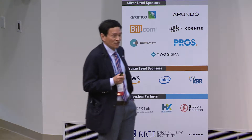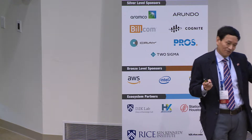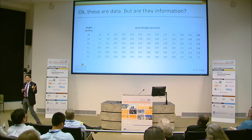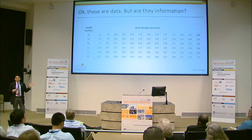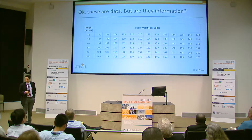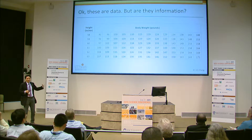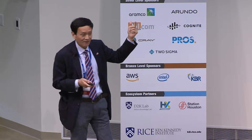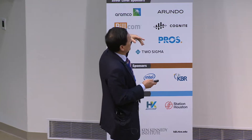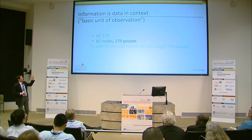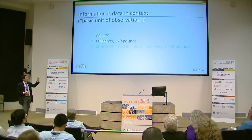And another distinction: we know what data is, but what is information? You've heard about information, knowledge, and things like that. If I give you random numbers, do you get any information? No. So information is actually data in context.